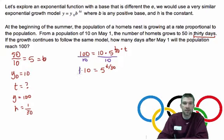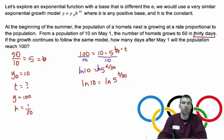And the only way to handle this is to natural log both sides. And remember, when we do this, what happens is I get the natural log of 10 is equal to the natural log of 5 to the T over 30th power.